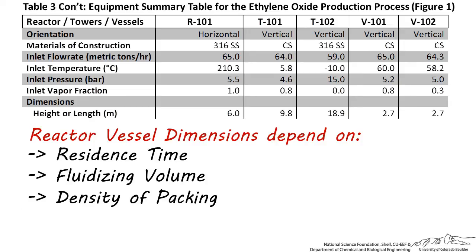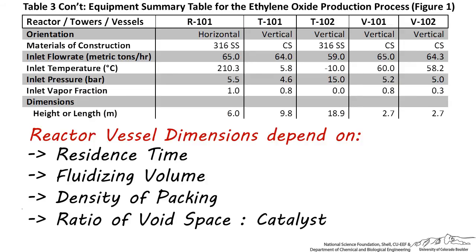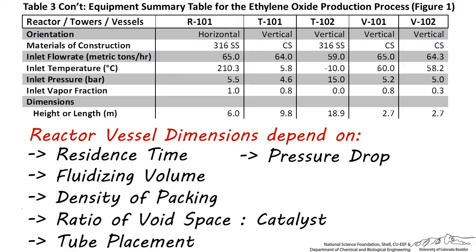Other factors include the placement of the packing in the reactor and its density, the necessary void space in the reactor to allow for reactants and products to flow through, and if tubes are being used, their placement, diameter, and length. If the catalyst is packed into a space such as tubes, the pressure drop across that volume, and many other factors.